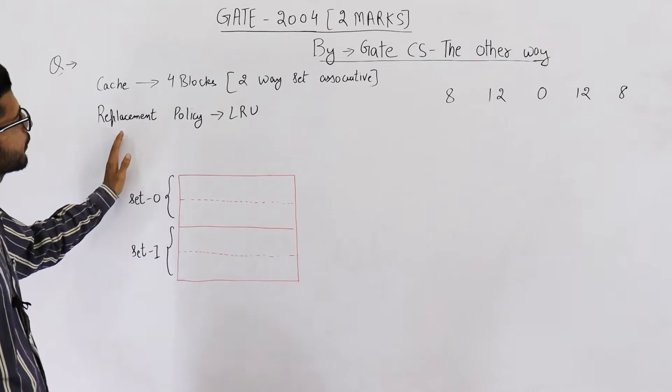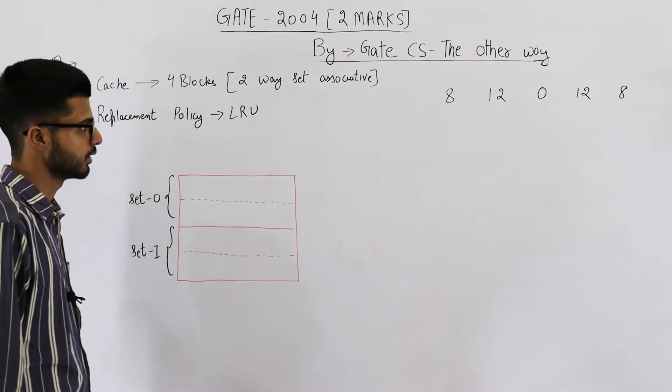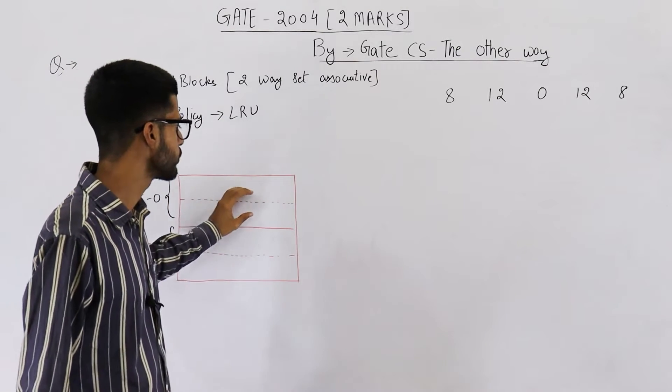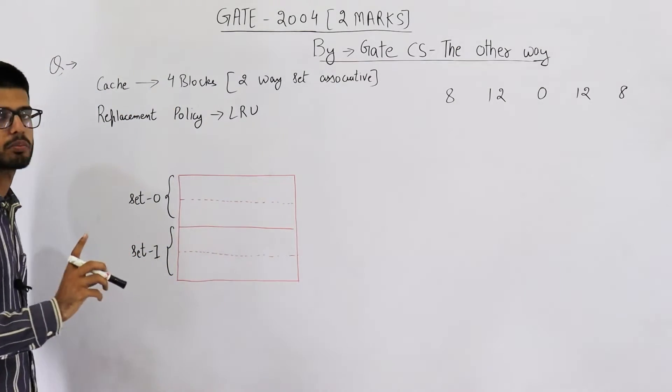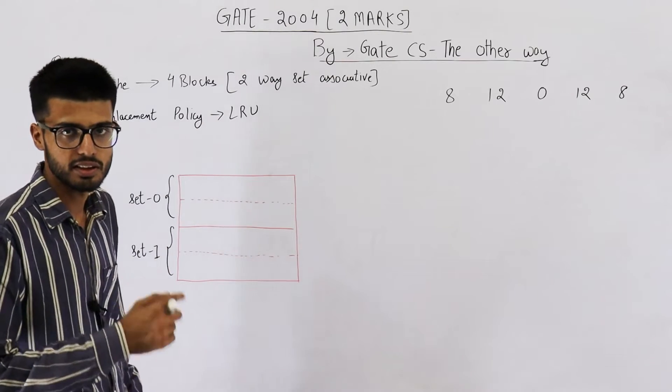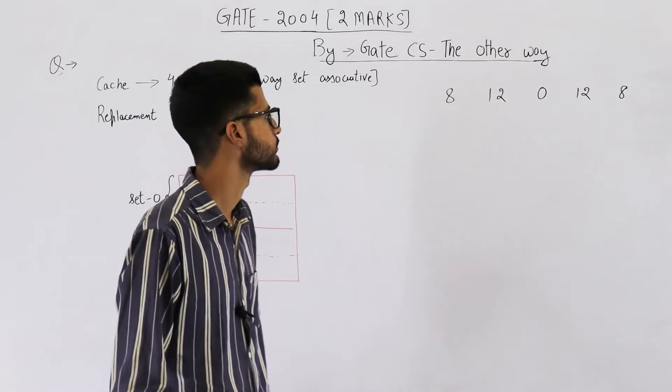Now the replacement policy is given as LRU. That means whenever both the lines of any set are filled, to replace a block, we'll use the least recently used scheme.